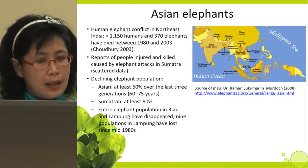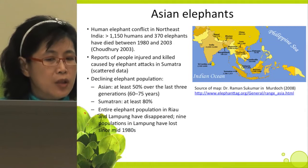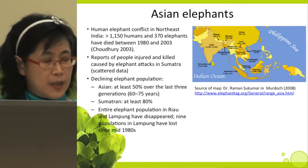One elephant generation is between 20 to 25 years. In Sumatra it is even worse — at least 80% decline. Entire populations in Riau and Lampung provinces have disappeared, and nine populations in Lampung have been lost since the mid-1980s.